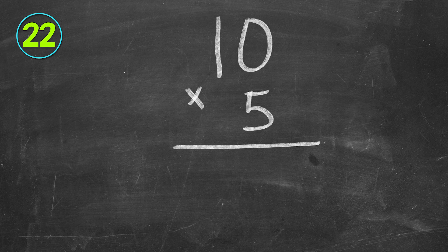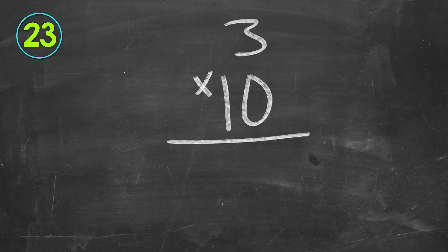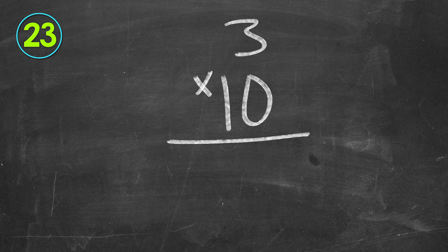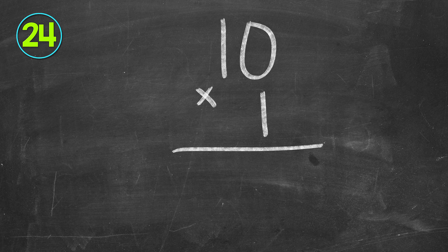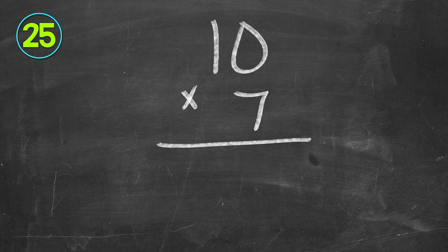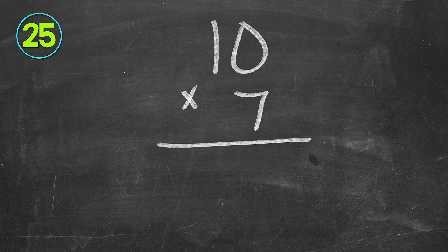10 times five, 50. Three times 10, 30. 10 times one, 10. 10 times seven, 70.